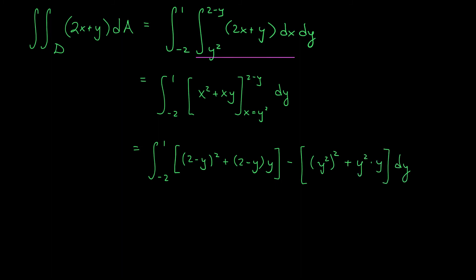Okay, it looks a little ugly, but the important thing is we've taken a calc 3 problem, computing this double integral, and we've reduced it down to a calc 2 problem. This is just a single variable integral that you would have seen back in calc 2. If you simplify this gross expression, what you should get is the integral from minus 2 to 1 of minus y to the 4 minus y cubed minus 2y plus 4 dy.